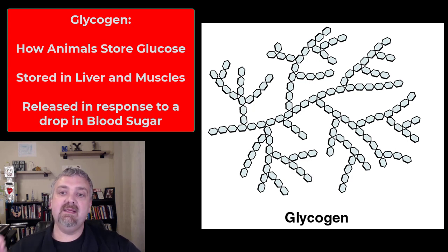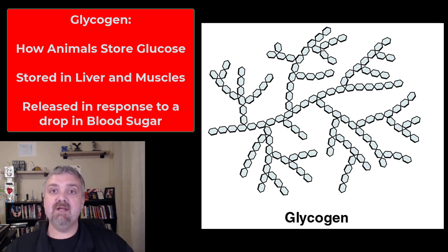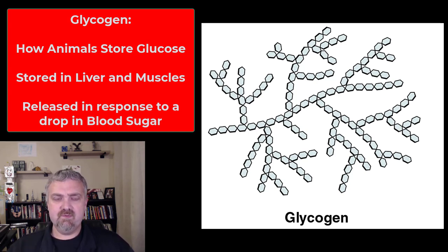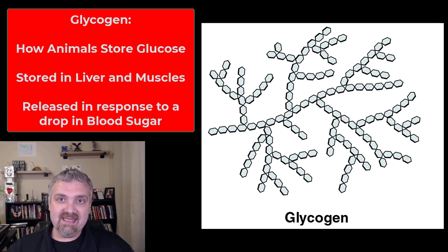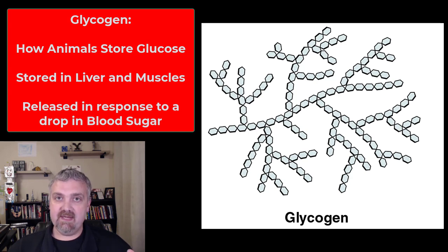Glycogen is branched, just like amylopectin, and this is how animals, including humans, store glucose. We store it in two key places — glucose is converted to glycogen and stored in the muscles and the liver. Muscle glycogen is used for the muscles — it's that saved-up energy the muscle is going to use. Liver glycogen is stored in your liver to keep your blood sugar stable. Think about it: you have supper at six o'clock at night and don't eat breakfast till eight in the morning — that's 14 hours without eating. The reason your blood sugar doesn't plummet is because your body releases this stored glycogen as glucose to keep your blood sugar elevated. Muscle glycogen: fuel for muscles. Liver glycogen: keeping your blood sugar elevated when you go long periods without eating.